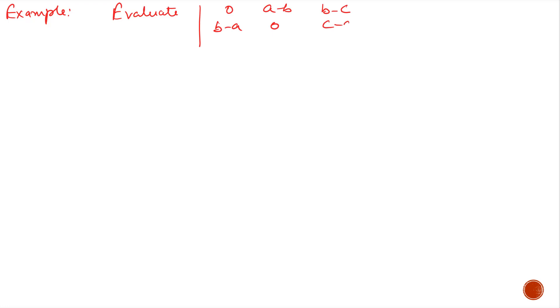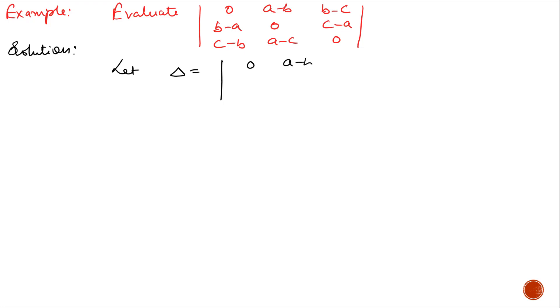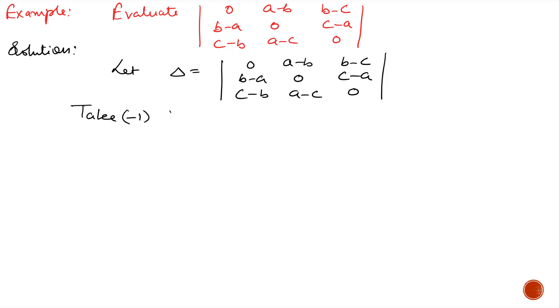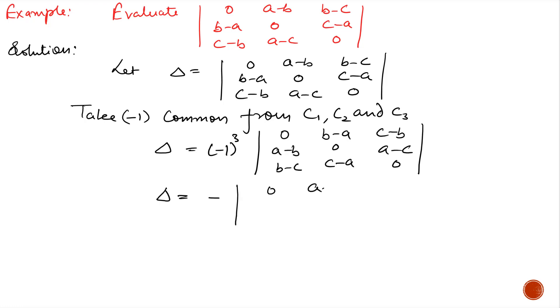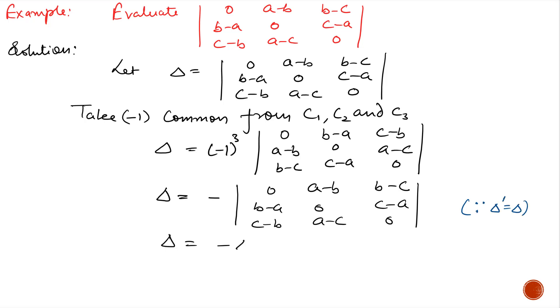Next example: Evaluate using properties of determinants the determinant of the skew-symmetric matrix with elements 0, (a-b), (b-c); (b-a), 0, (c-a); (c-b), (a-c), 0. Let Δ equal the whole determinant. Take minus common from c1, c2, and c3. We get Δ = (-1)³ times the transpose determinant. Since the transpose of a determinant equals the determinant, we get Δ = -Δ, so 2Δ = 0, and therefore Δ = 0.